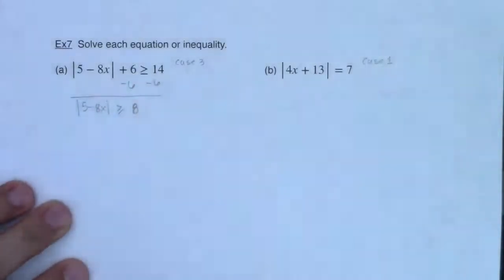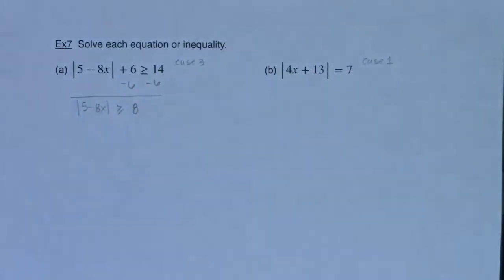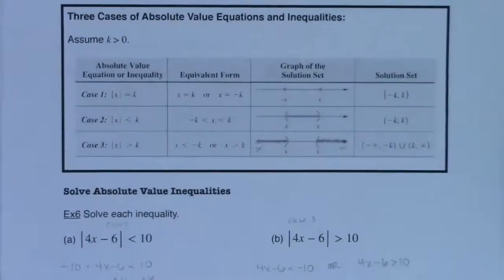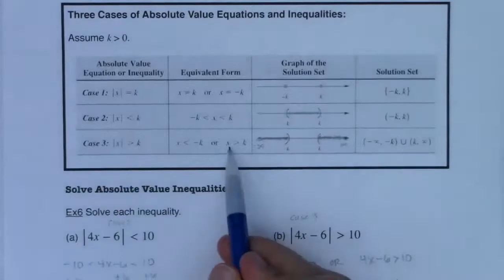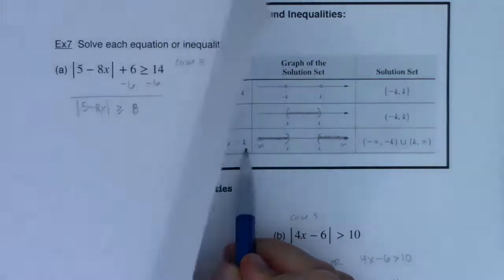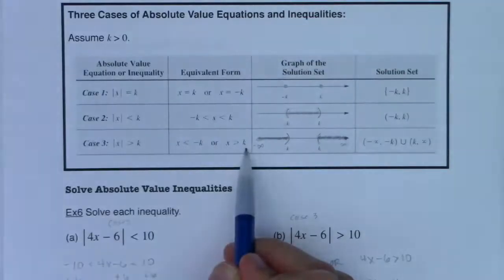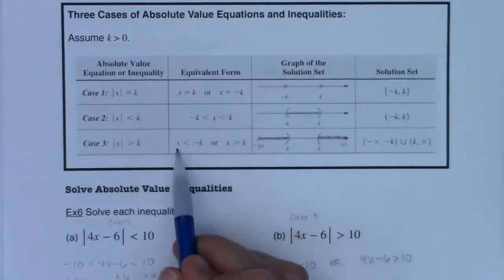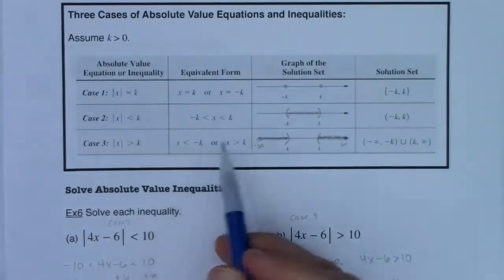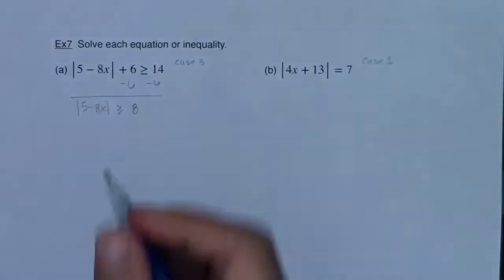For Case 3, I need to set up two inequalities. I need whatever's in my absolute value expression to be greater than k — my k in this case is 8 — or I need whatever's in my absolute value expression to be less than negative k, which is less than negative 8.